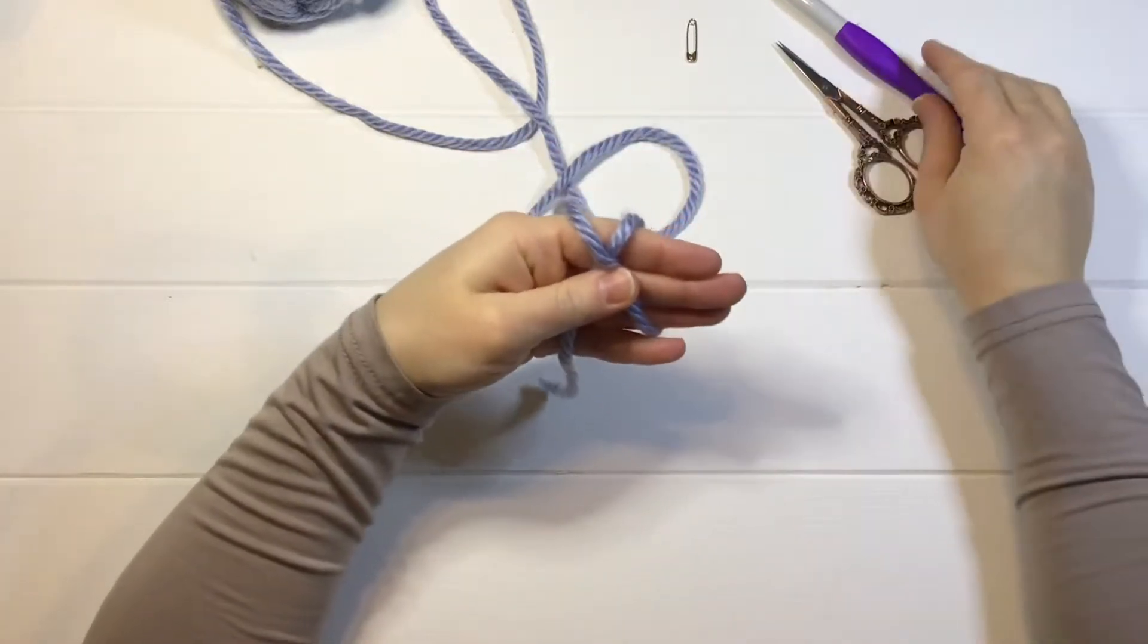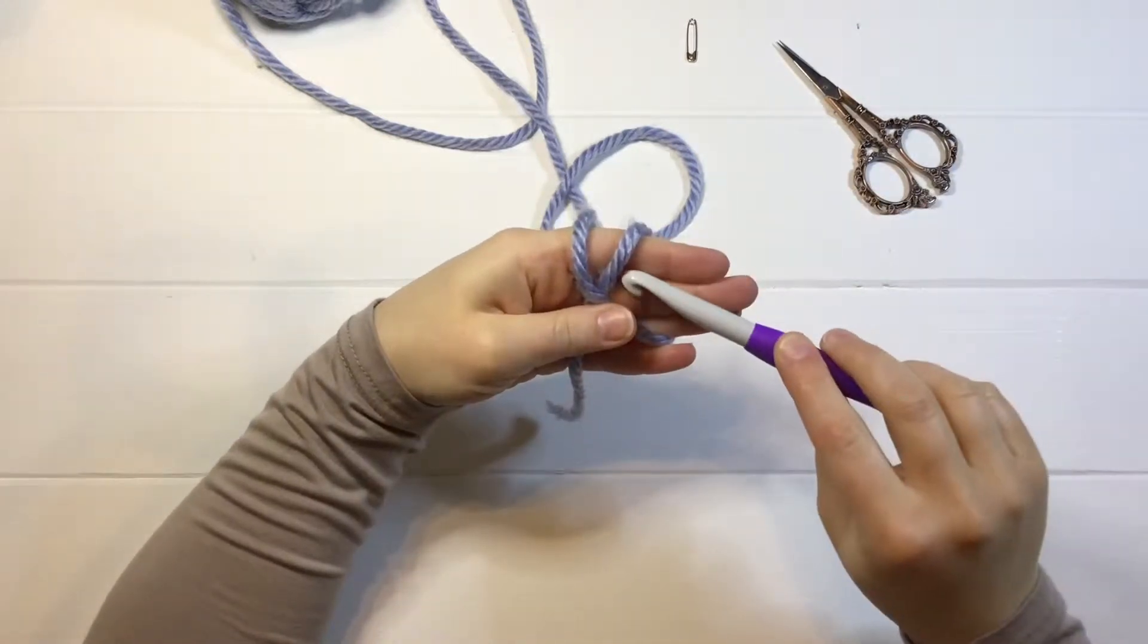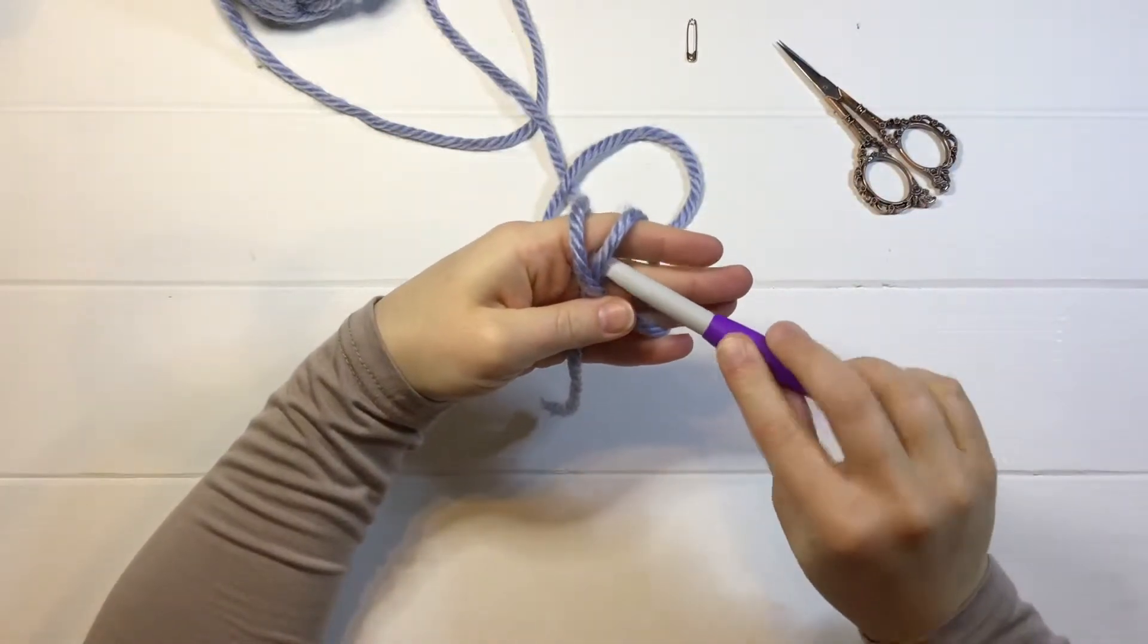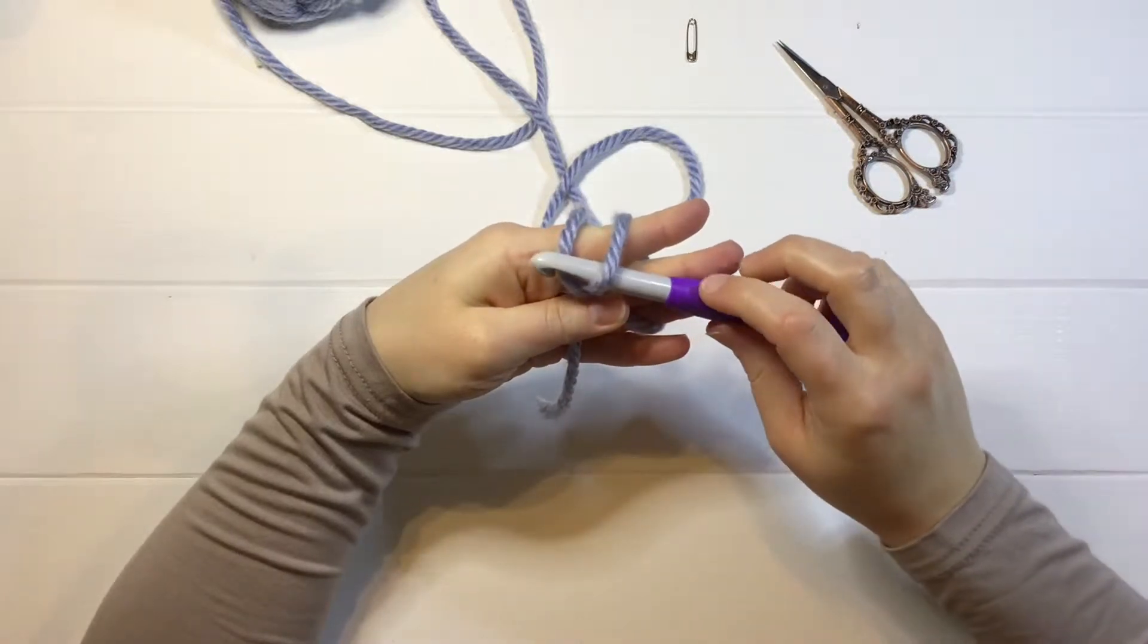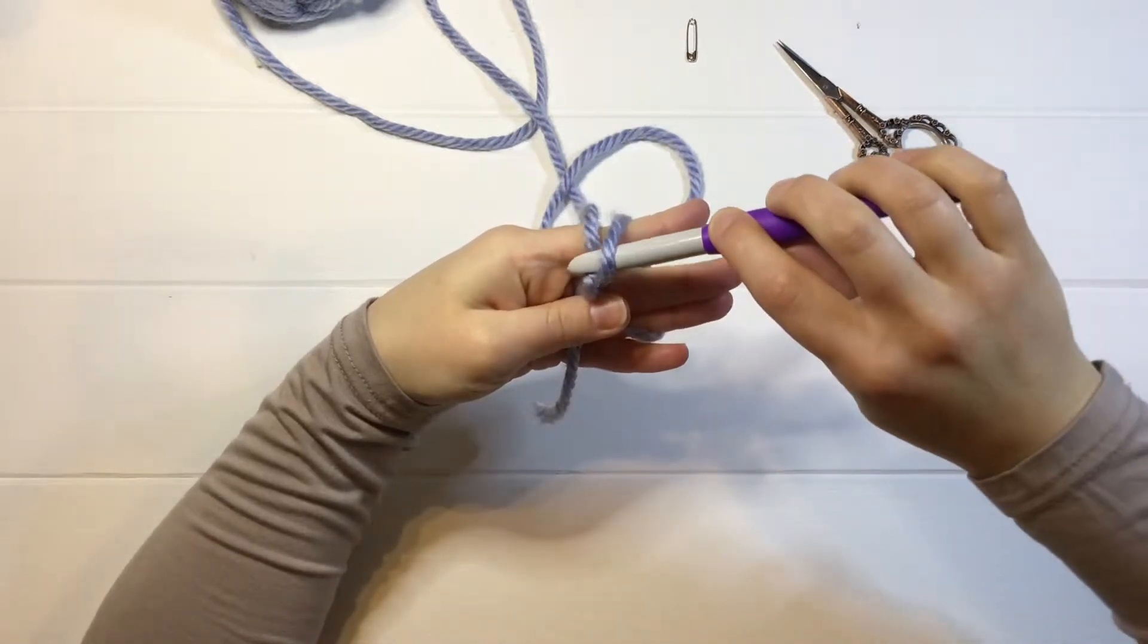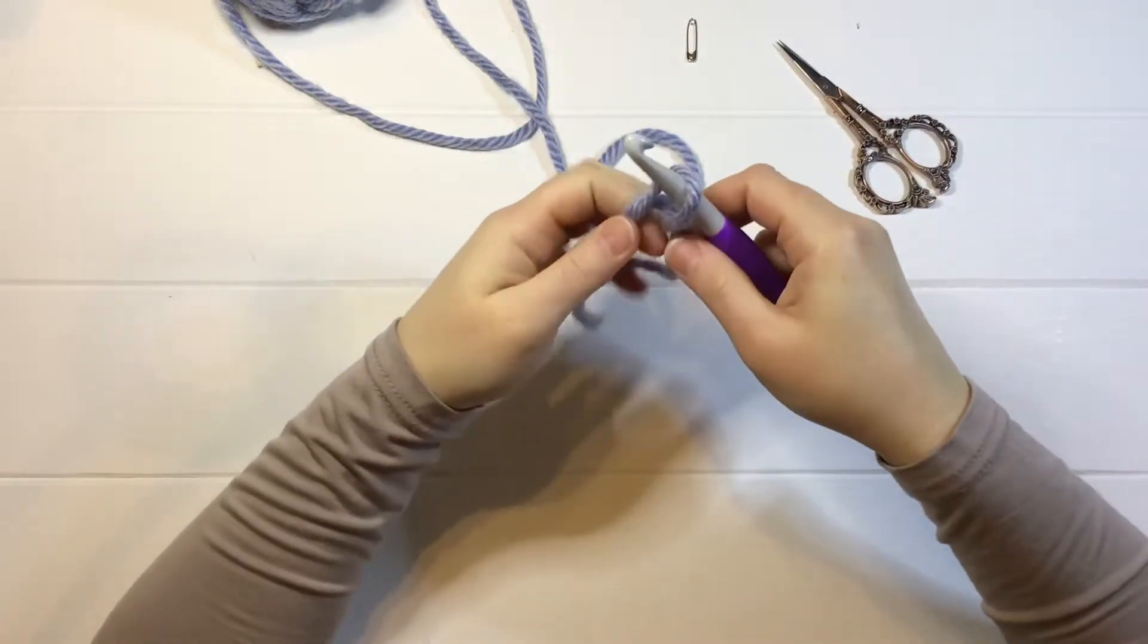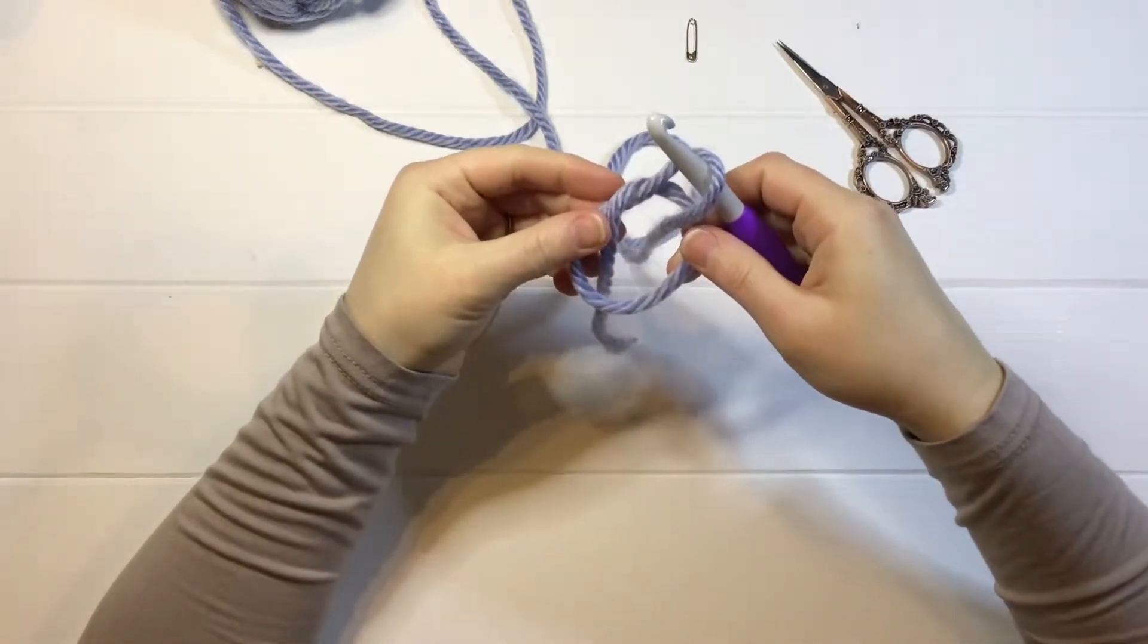Hold that in place with your thumb, grab your crochet hook, and you're going to go under this first loop here, and then grab this piece of yarn here, and bring it under that first piece of yarn, just like that.